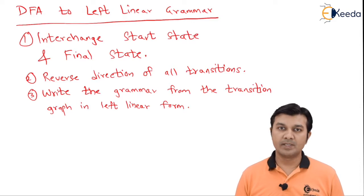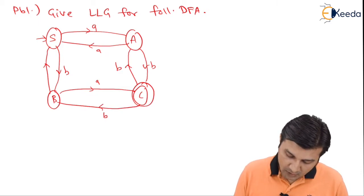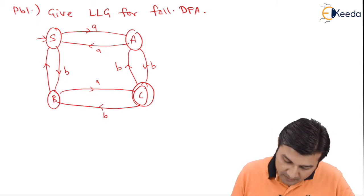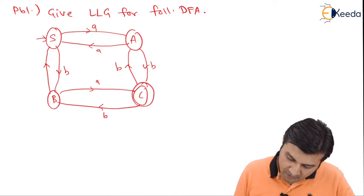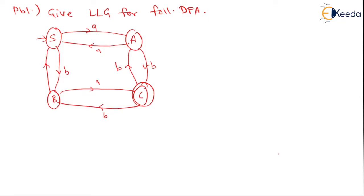Let us look at a problem and see if we can solve it. We have to find the LLG for the following DFA. We know the first step is the interchanging of the start state and the final state. So let me interchange the start state and the final state. I have my start state over here now — I write an arrow over here and my final state is over here. I have interchanged my start state and final state's position. Then rest everything is going to be the same; therefore, my A will be over here and my B will be over here.